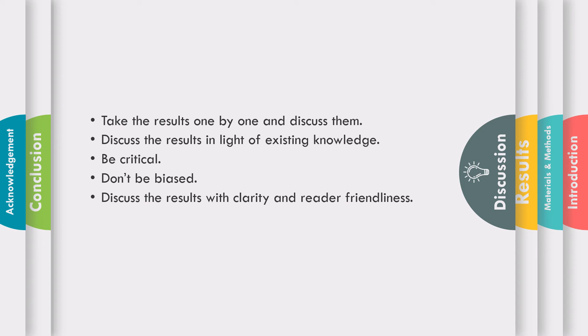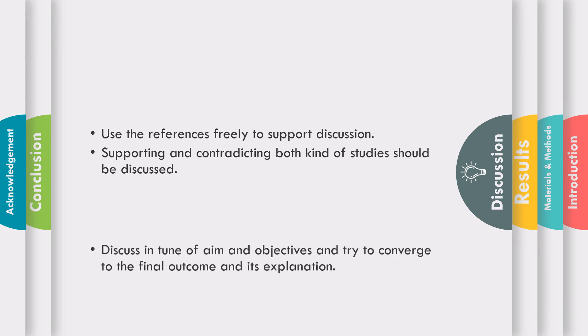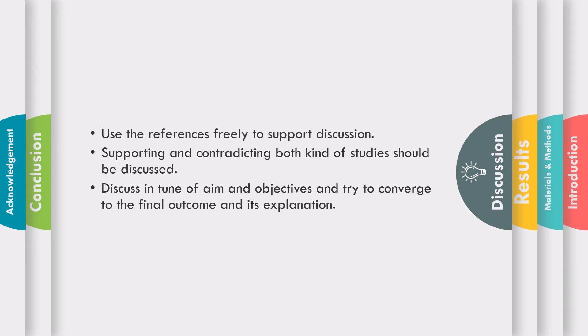These two attributes are the most important and vital characteristics of a research article. Use the references freely to support discussion. And this is a section which must have good number of relevant references. Supporting and contradicting both kind of studies should be discussed. Discuss in tune of aim and objective and try to converge to the final outcome and its explanation.